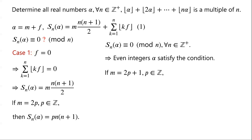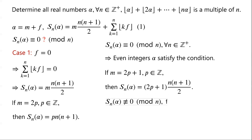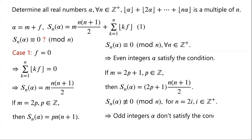If m is an odd integer, we let m = 2p+1 where p is an integer. Then S_n(α) = (2p+1)·n(n+1)/2. It is evident that S_n(α) is not congruent to 0 modulo n for every positive even integer n. This is because if n is a positive even integer, then n+1 is odd, so (2p+1)(n+1) is odd and not divisible by 2. Therefore, odd integers do not satisfy the condition.